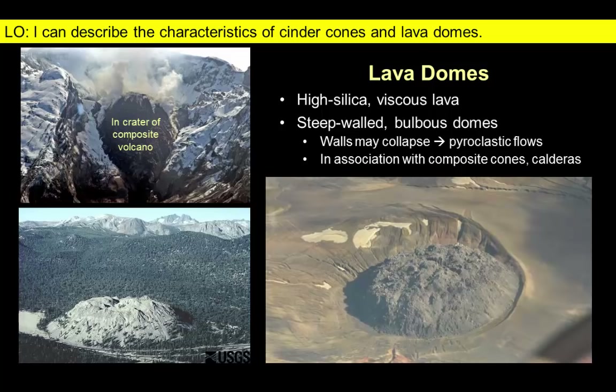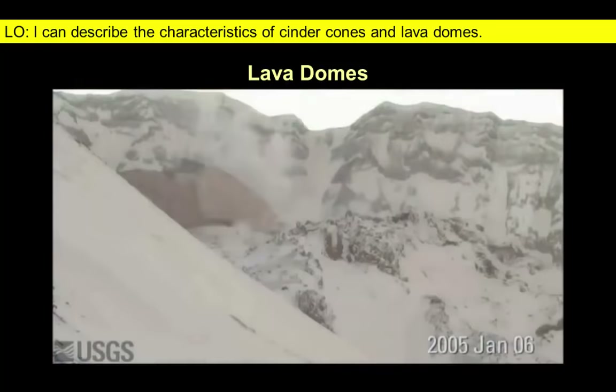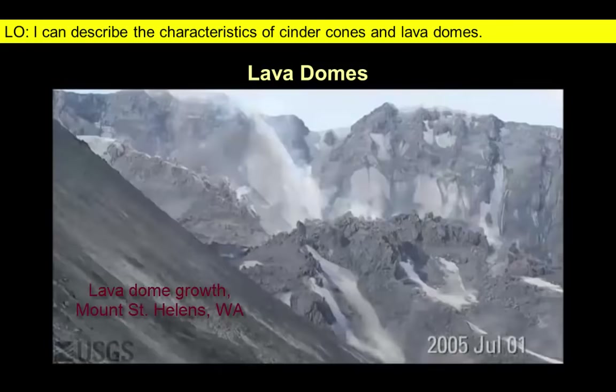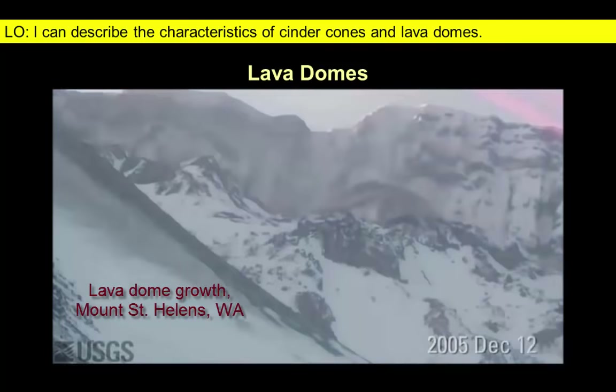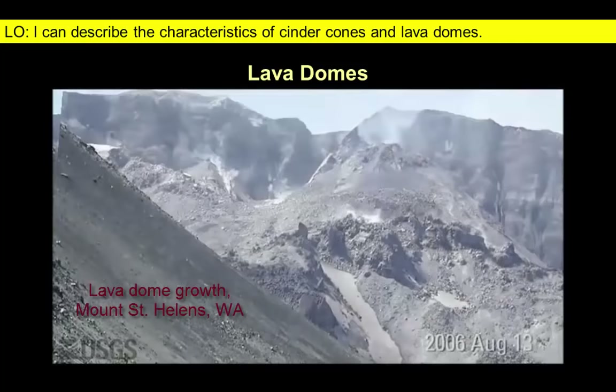The steep slopes along the dome flanks may collapse to create dangerous hazards such as pyroclastic flows. While lava domes often form in the craters of composite volcanoes, they can also be found in other volcanic environments where high silica magmas are generated. Take a look at these sped-up time-lapse images of the growth of a lava dome in the crater of Mount St. Helens over a period of nearly three years. Notice the steepness of the slopes. This looks fast but it actually represents very slow, gradual movements.